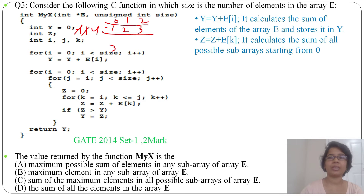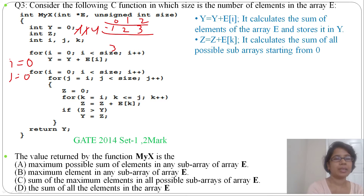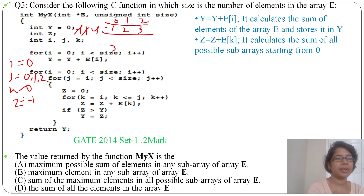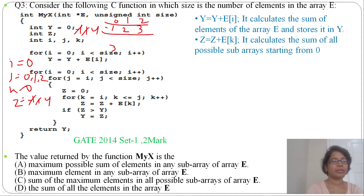z calculates the sum of all possible sub-arrays starting from zero. For i equal to zero, z equals i, so z is zero, and z less than size. Then for k equal to i, k is zero, k less than or equal to z. First it adds e[0], so z becomes minus one. Then z less than size means z can be zero, one, and two. Next it adds k=0 and k=1, so z becomes one. Next it adds one and three, so z becomes four. When i equals zero, z value is four.